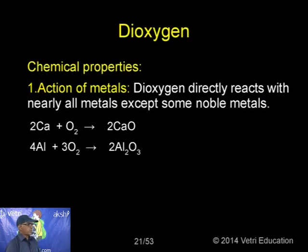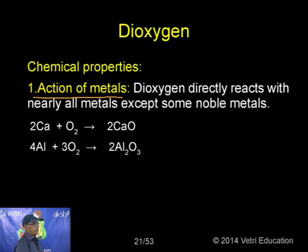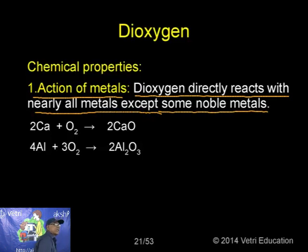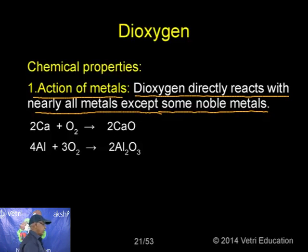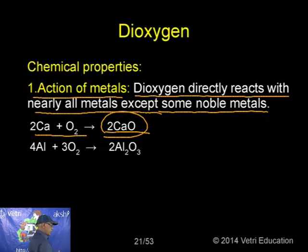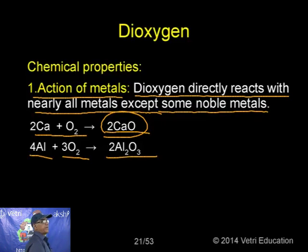Under chemical properties, dioxygen directly reacts with nearly all metals except noble metals — gold, silver, and platinum. For example, two moles of calcium with one mole of oxygen gives two moles of calcium oxide, and four moles of aluminium with three moles of oxygen gives two moles of Al₂O₃.